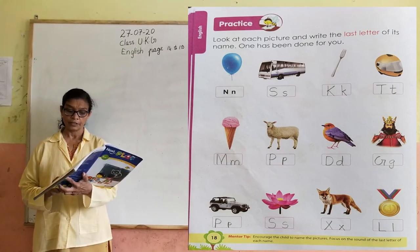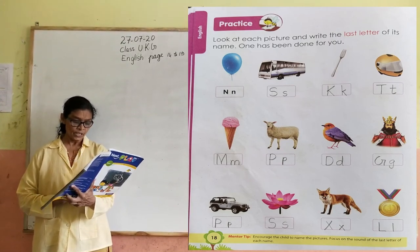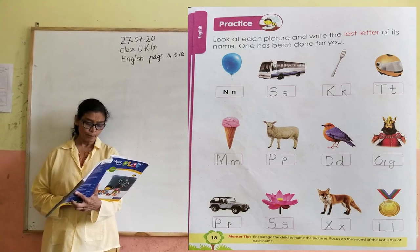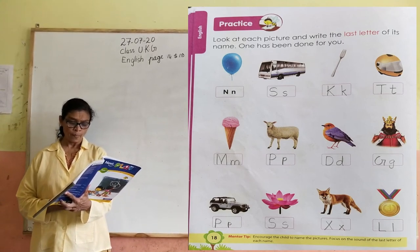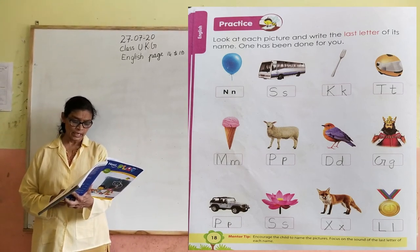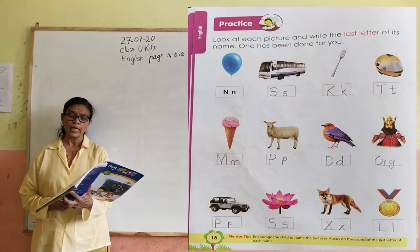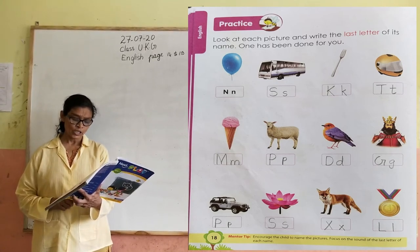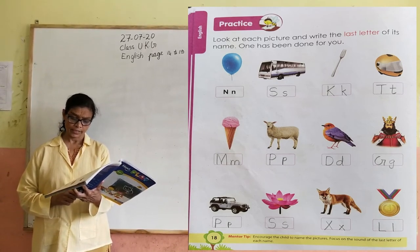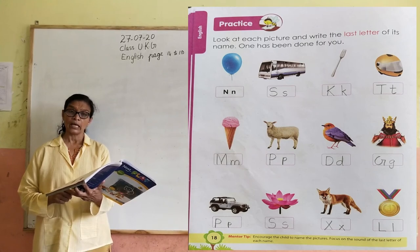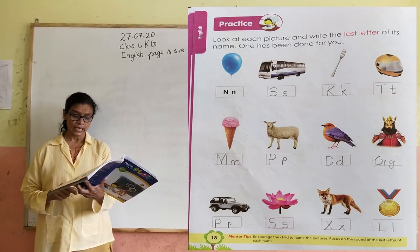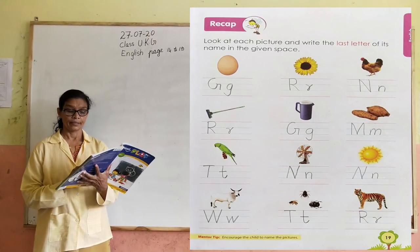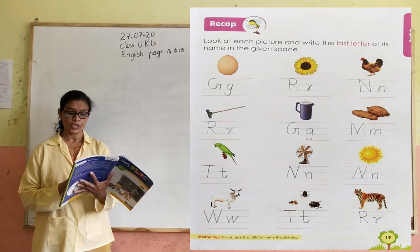King. Jeep — last letter of jeep is P. Lotus — last letter of lotus is S. Fox — last letter of fox is X. Metal — last letter of metal is L. Egg — last letter of egg is G.